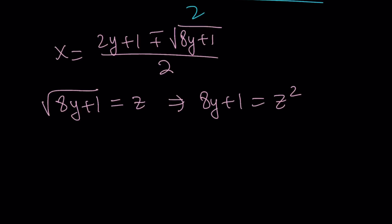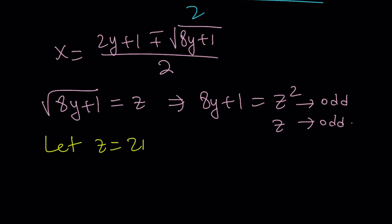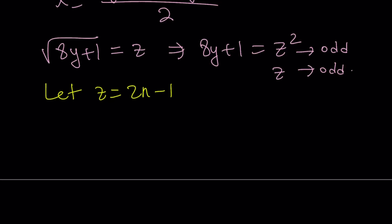From here we get 8y plus 1 equals z squared, where z is an integer. Notice that z squared is odd, therefore z is odd — otherwise, if z is even, then its square would also be even. Since z is odd, I can write it in a nicer way. Let z equal 2n minus 1, where n is another integer, because we can express odd integers as 2n minus 1. This substitution will be very helpful because we're going to square it and simplify.